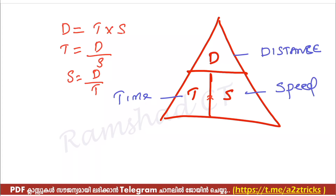This is the base formula we have to use. When converting kilometer per hour to meter per second, we use the conversion factor.